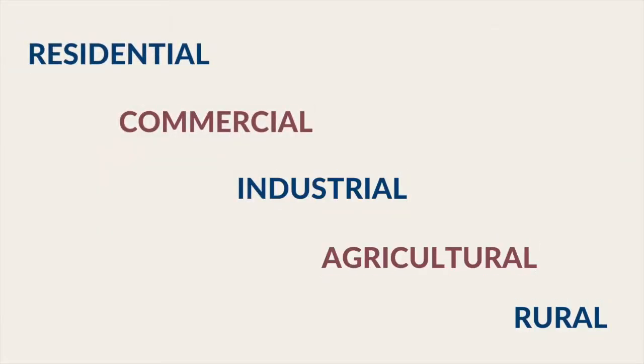There are five main types of zoning: residential, commercial, industrial, agricultural, and rural.